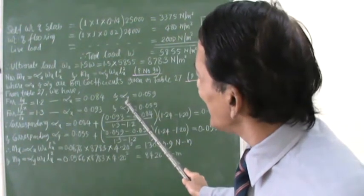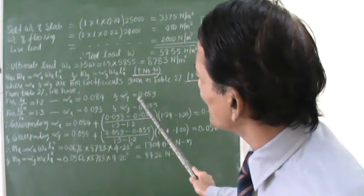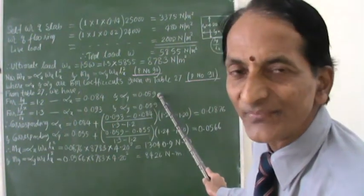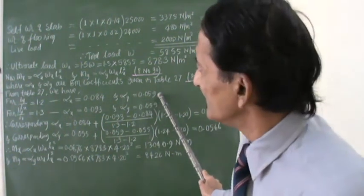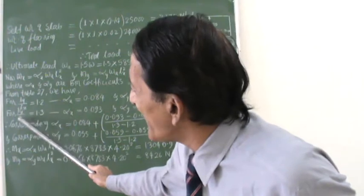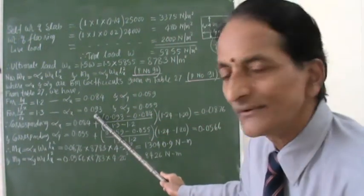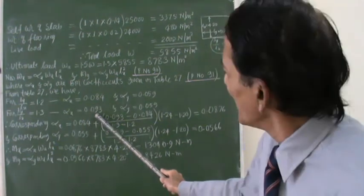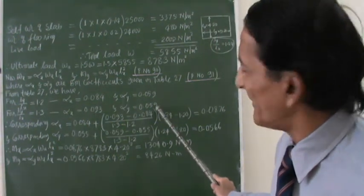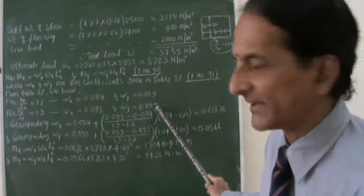Did you see? Now, similarly, alpha Y value is 0.059. Is it right? Similarly, for LY by LX is equal to 1.3, alpha X is so much. See the code. And alpha Y value is so much. Am I right? So now these values have been taken from table 27.